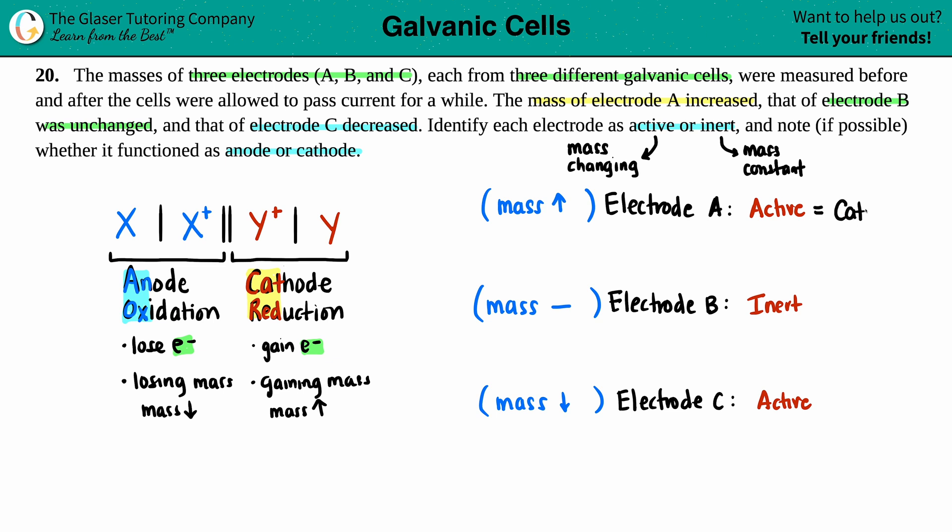For electrode C, since this mass is decreasing, you're losing mass, you're losing electrons. That's oxidation, and that occurs at the anode. So this would have to be the anode.